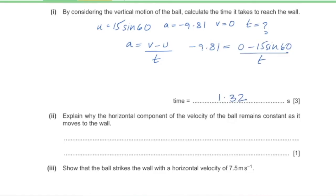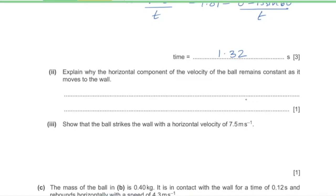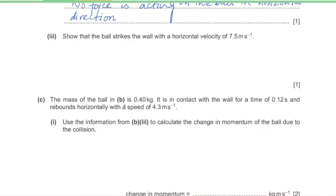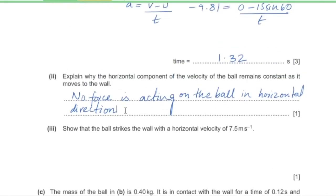Explain why the horizontal component of velocity remains constant as the ball moves to the wall. There is no force acting on the ball in the horizontal direction, so there is no acceleration, and therefore no change in horizontal velocity.